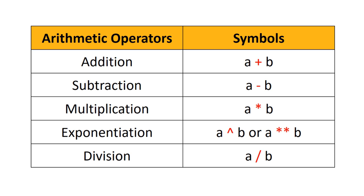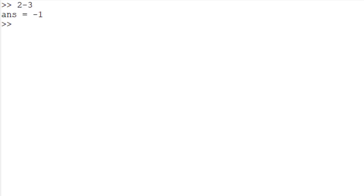Octave also supports basic arithmetic operators. In this table, 'a' and 'b' are variables or numeric numbers. For addition, use the plus sign; for subtraction, the minus sign; for multiplication, use the star sign (above the number 8 on the keyboard); for exponentiation, use the caret (above number 6) to calculate a to the power of b; alternatively, use double star signs. For division, use the slash sign.